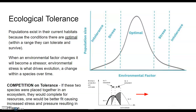Every organism has an optimal range for its survival — for example, pH or temperature. This is the range of an environmental factor in which the organism is most suited and successful. When pushed outside that optimal range, we identify that as stress on the organism. Some organisms can survive slightly outside that range for a short period, but over time they will become intolerant and ultimately unable to survive if pushed too far outside it.